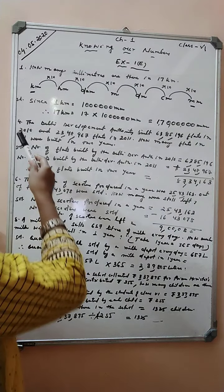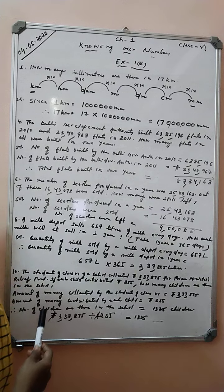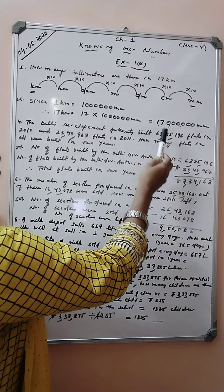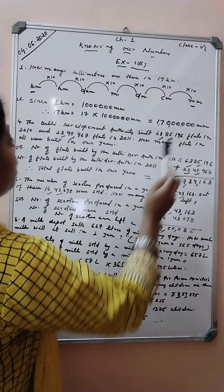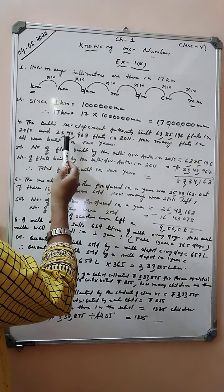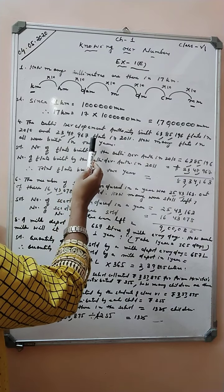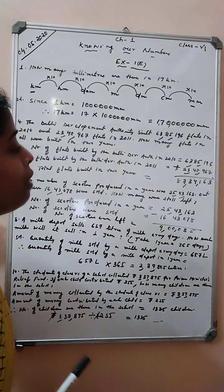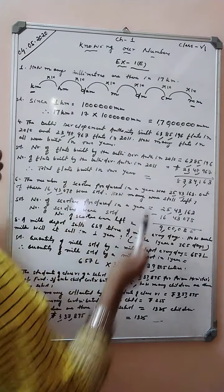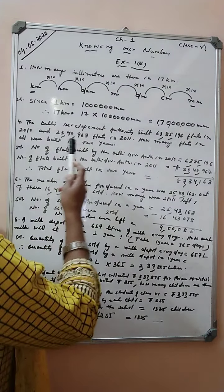Now let us understand the next question. The Delhi Development Authority built 63,85,196 flats in 2010 and 23,48,967 flats in 2011. How many flats in all were built in 2 years?